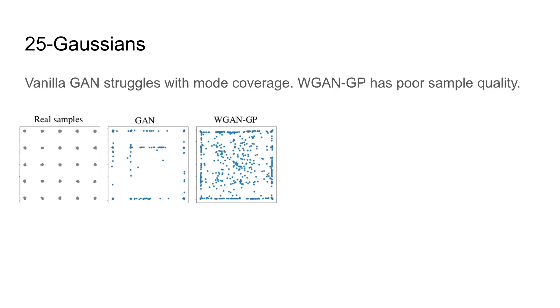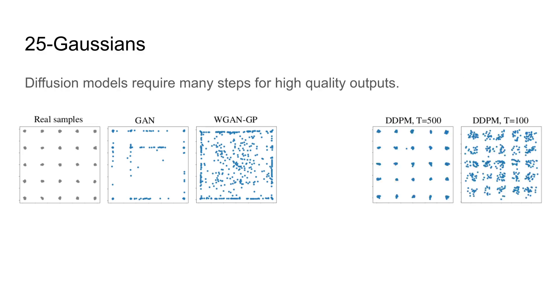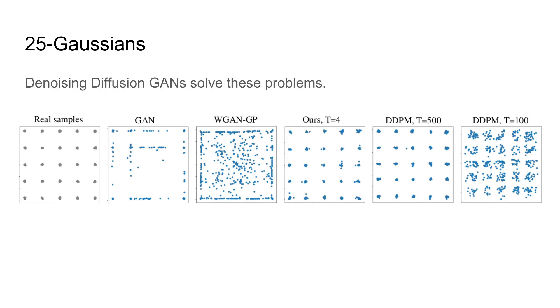Although this issue is alleviated by Wasserstein GAN, it still has poor sample quality. Diffusion models produce great samples but they need many denoising steps to be effective. Even 100 steps is not enough. You begin to see good results at 500 steps. This makes diffusion models remarkably slow.